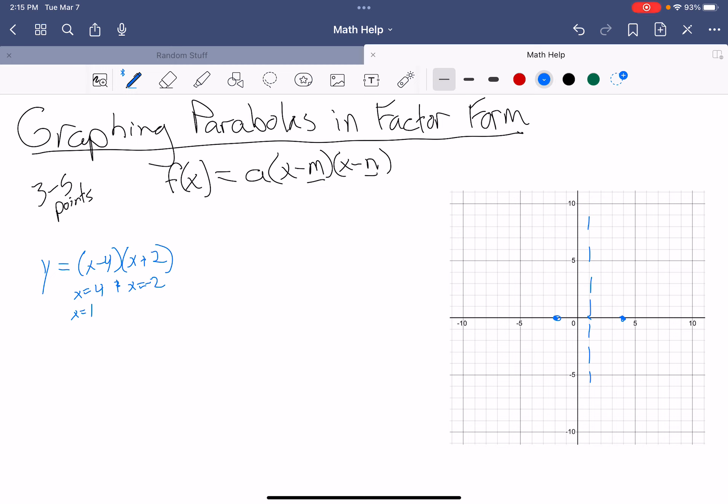I'm going to evaluate this function at 1. When I do that, I'll get y equals 1 minus 4 times the quantity 1 plus 2. Simplify that a little bit. I have negative 3 times 3, which is negative 9. So my vertex is going to be at 1, negative 9. So 1, negative 9, down here.